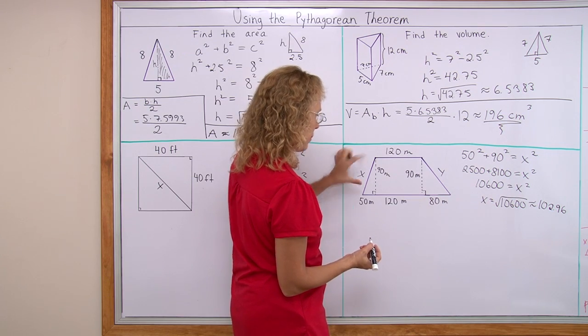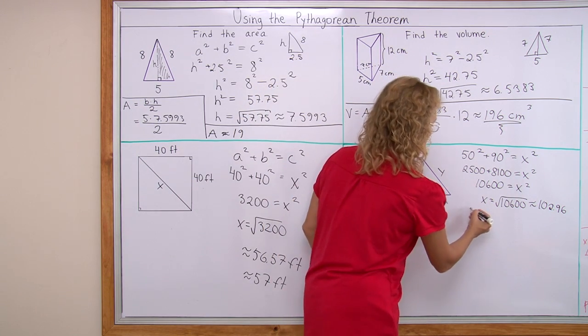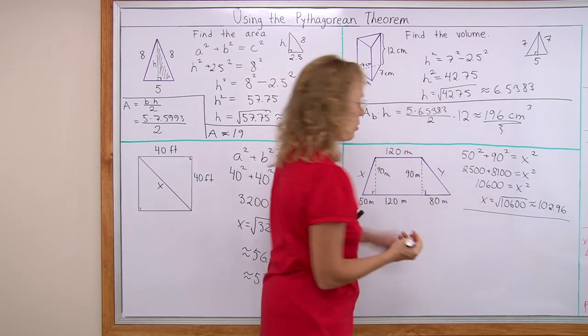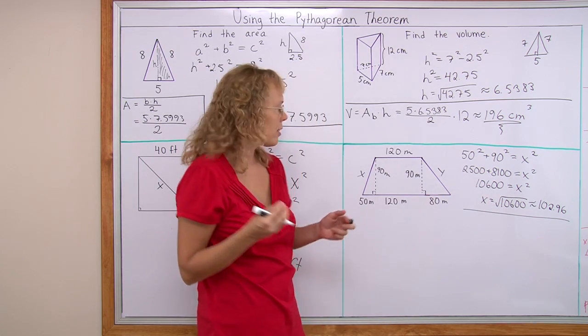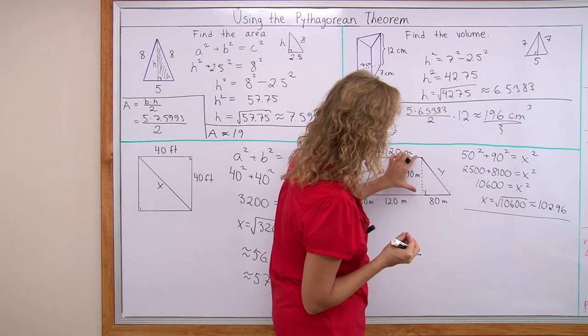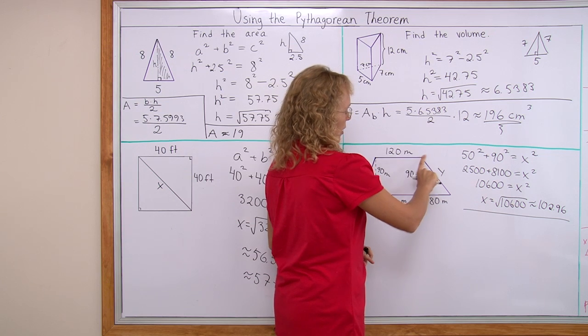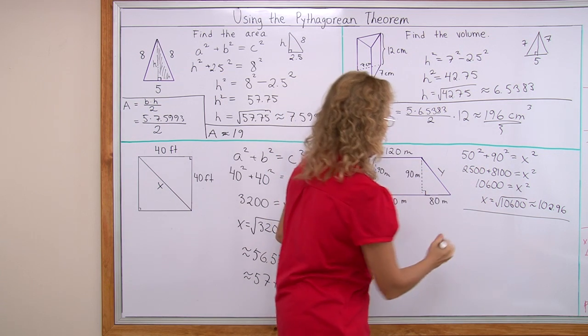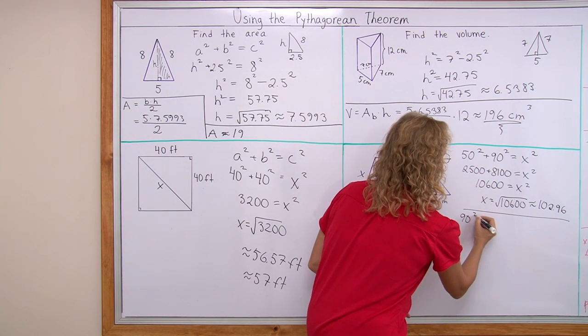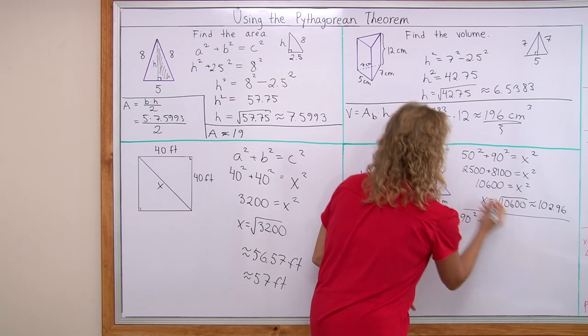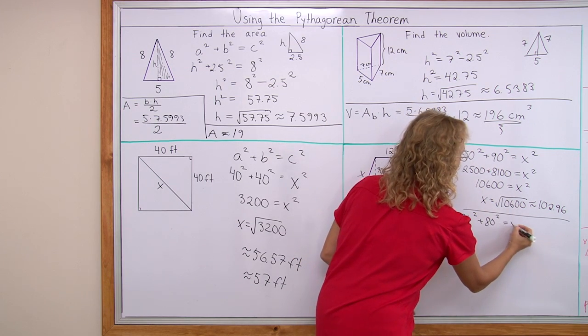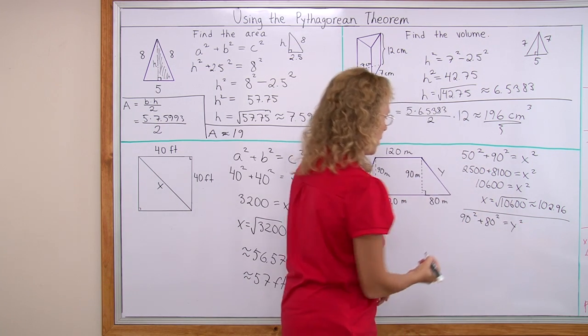This one here. And then y. For y, we again use the Pythagorean theorem. Here, the legs, the two sides of the triangle at the right angle are 90 and 80m, so we get 90 squared plus 80 squared equals the hypotenuse squared, y squared.